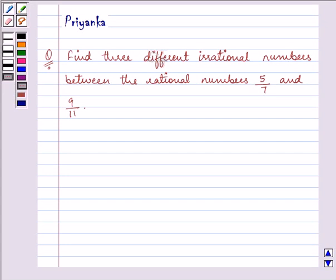Hi and how are you all today? I am Priyanka and let us do the following question which says find three different irrational numbers between the rational numbers 5 by 7 and 9 by 11.